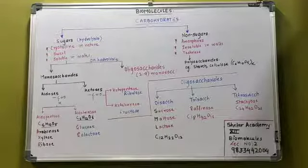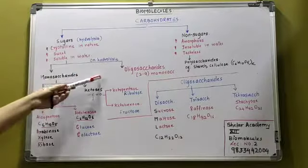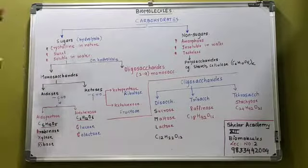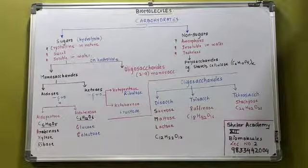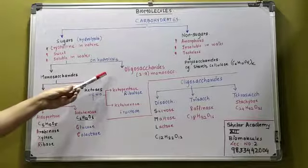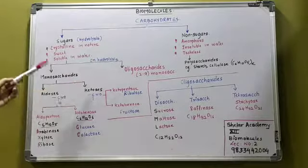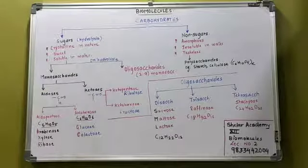These are oligosaccharides. Oligosaccharides means they will yield 2 to 9 monosaccharide units on hydrolysis. They are called as the oligosaccharides.